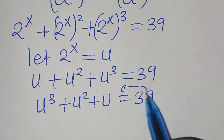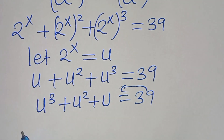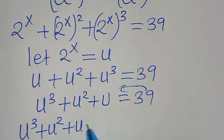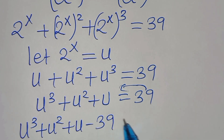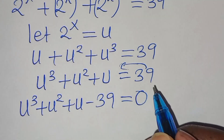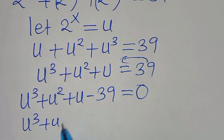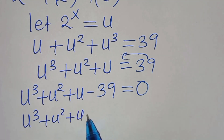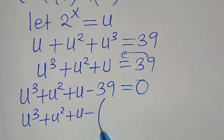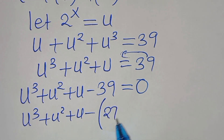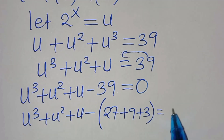The next step is to take 39 to the left-hand side so that we have u to the power of 3 plus u to the power of 2, then plus u minus 39, this is equal to 0. We can express 39 as 27 plus 9 plus 3, this is equal to 0.